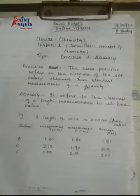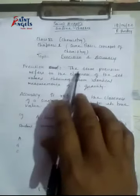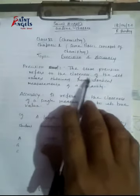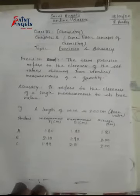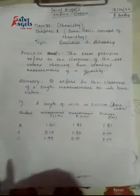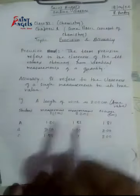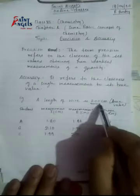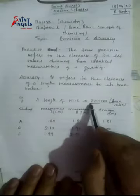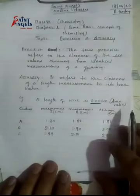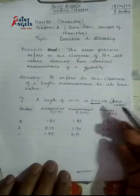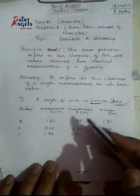As you know, Precision — the term Precision refers to the closeness of the set values obtained from the identical measurement of a quantity. Now let us take an example. हमने एक example लिया है, जिसमें एक wire का जो length है वो 2 cm है। यह true value है। जो calculated value निकाला गया है, 2.00 cm — एक wire का हमने length measure किया। अब इस wire को measure करने के लिए, हमने 3 different students को लगाया कि आप उसको measure करके बताओ।